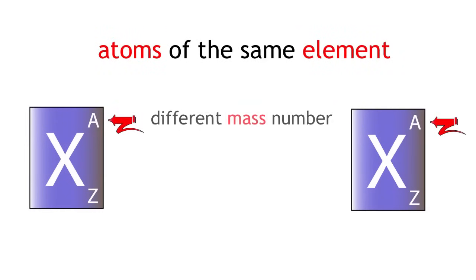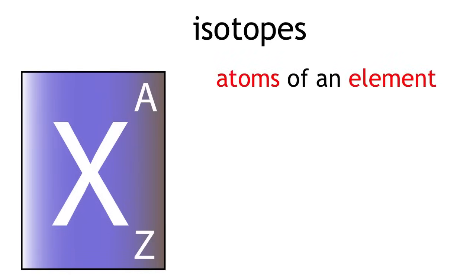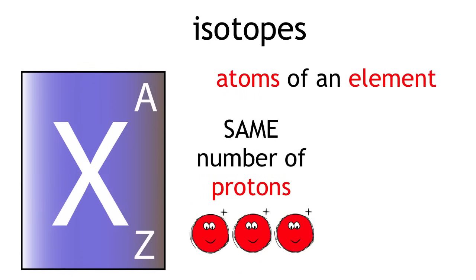Atoms of the same element with a different mass number are known as isotopes. They are defined as atoms of an element which have the same number of protons but a different number of neutrons.